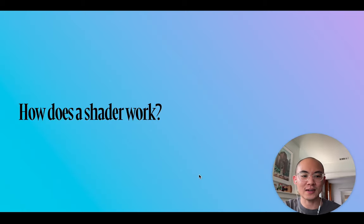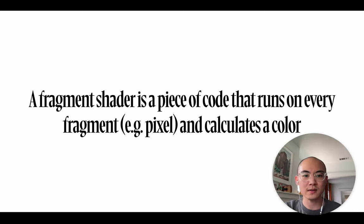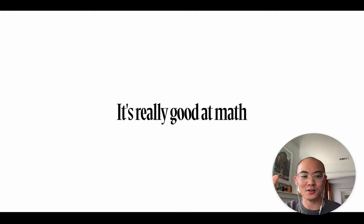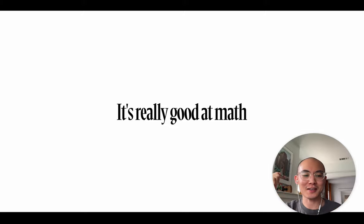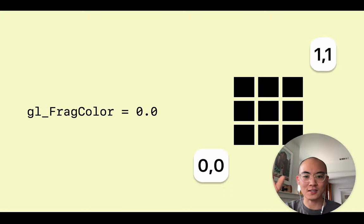Shaders are little programs that run inside the graphics pipeline. A fragment shader is that piece of code that runs on every fragment — most of the time we're talking about a pixel — and it calculates the color for that pixel. It's super fast at math, and a lot of the demand for graphics cards these days is actually because of crypto mining and machine learning, which want to utilize this fast, multi-core math processor to do calculations in parallel.